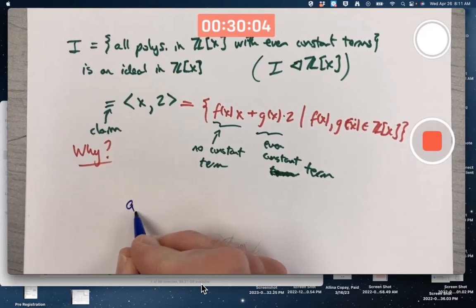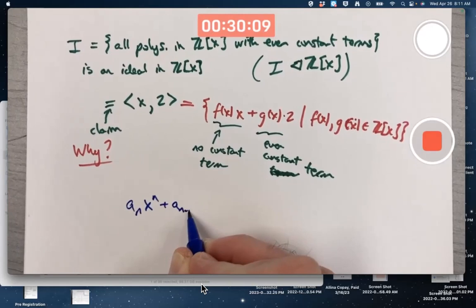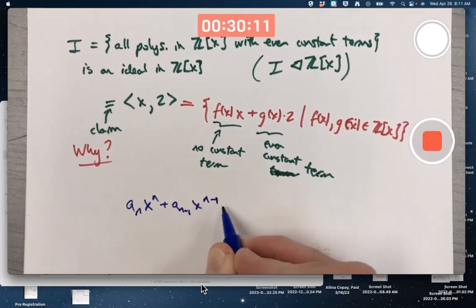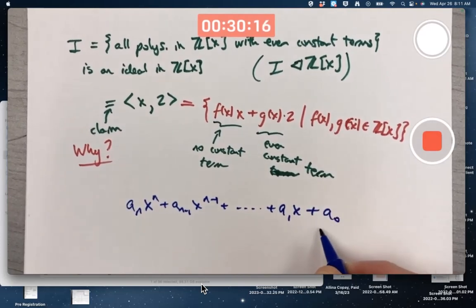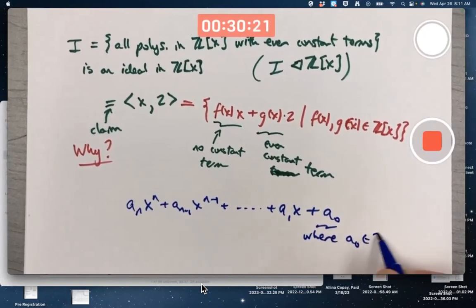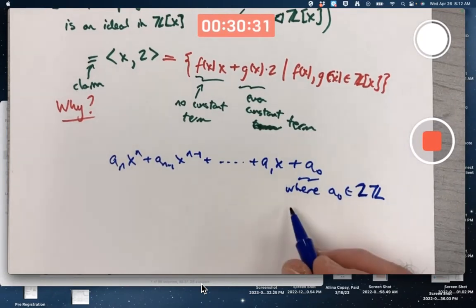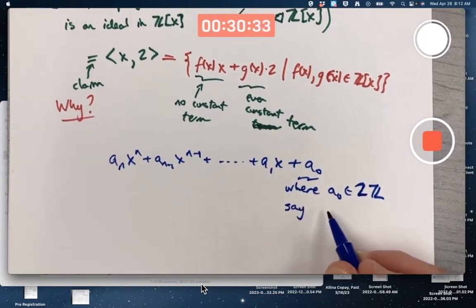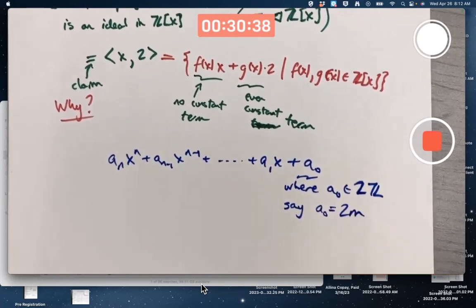Imagine writing down a polynomial with an even constant term: a_n x^n plus a_(n-1) x^(n-1) plus dot dot dot plus a_1 x plus a_0, where a_0 is even. Say a_0 is in 2Z for shorthand notation. Say for extra emphasis a_0 is 2 times, oh call it m or something.